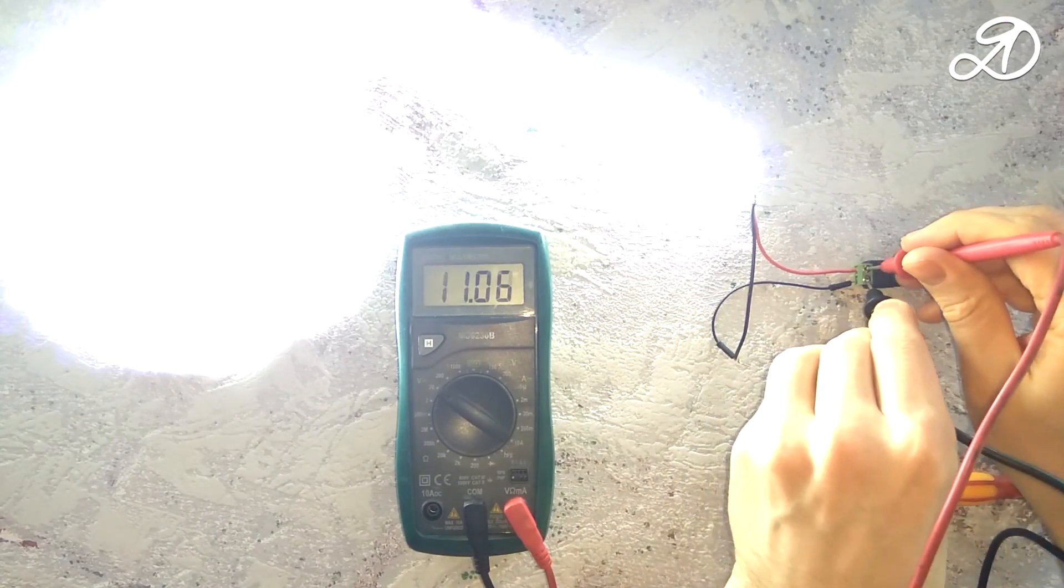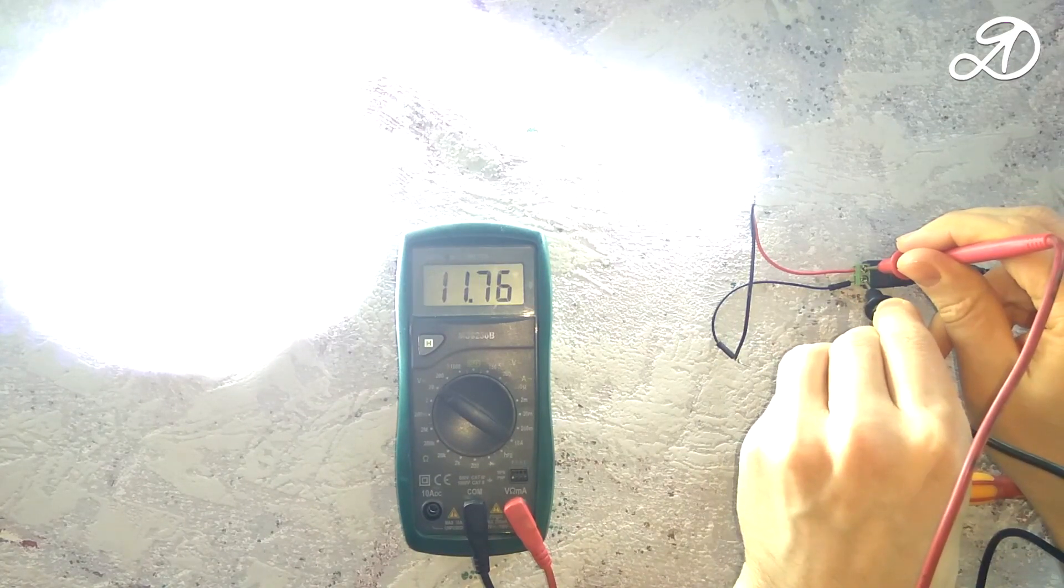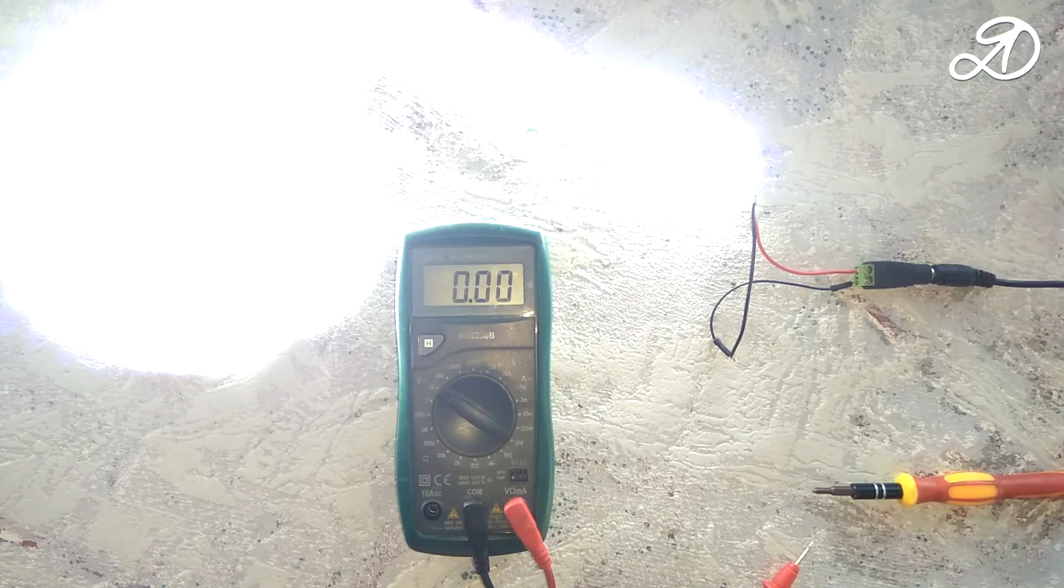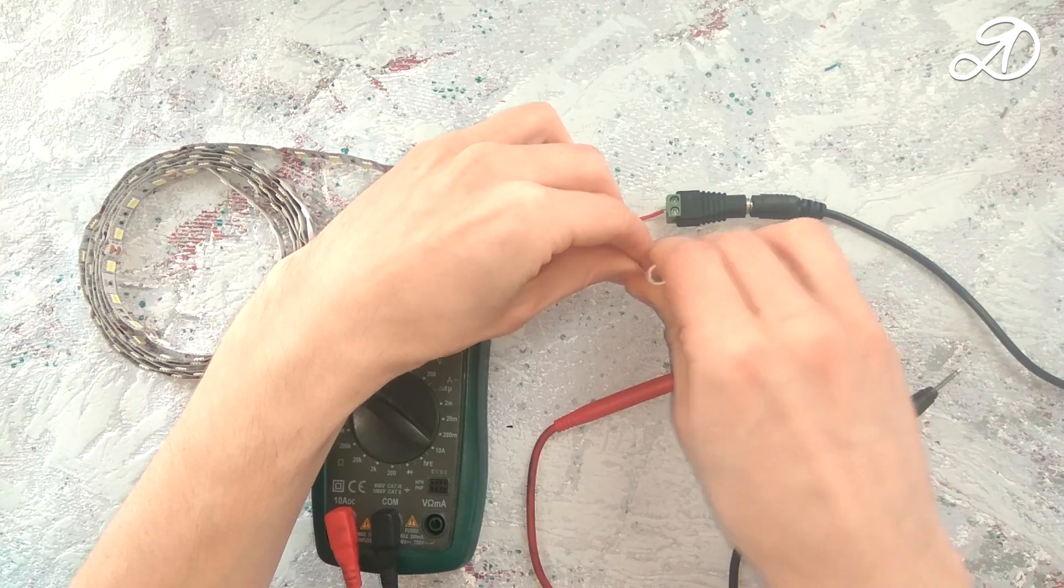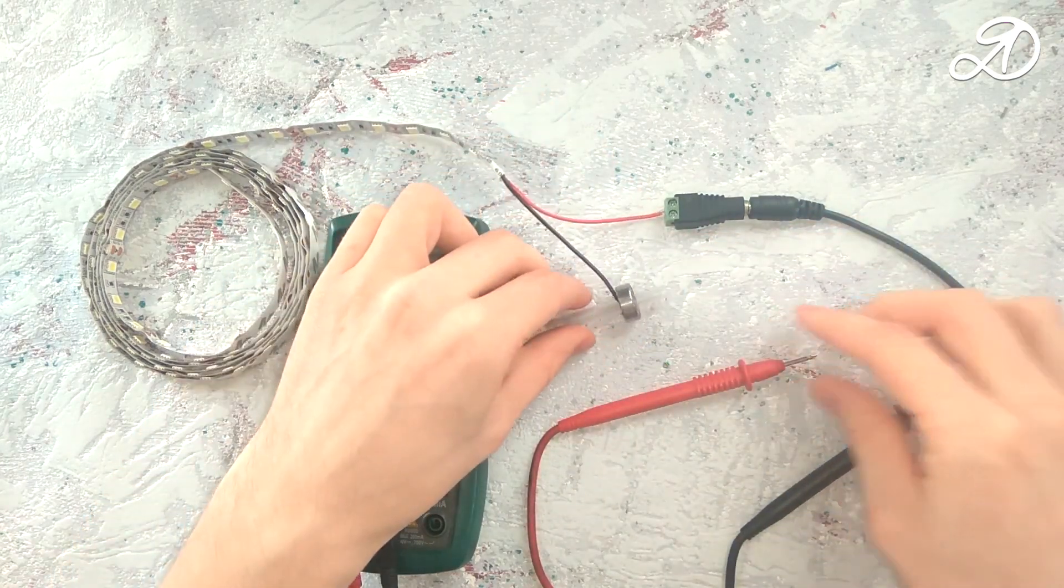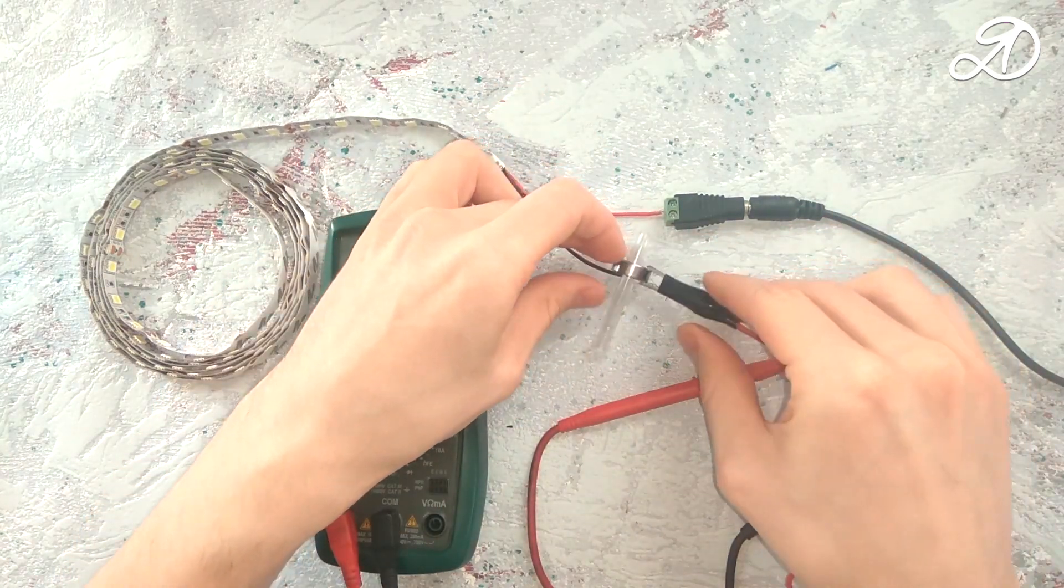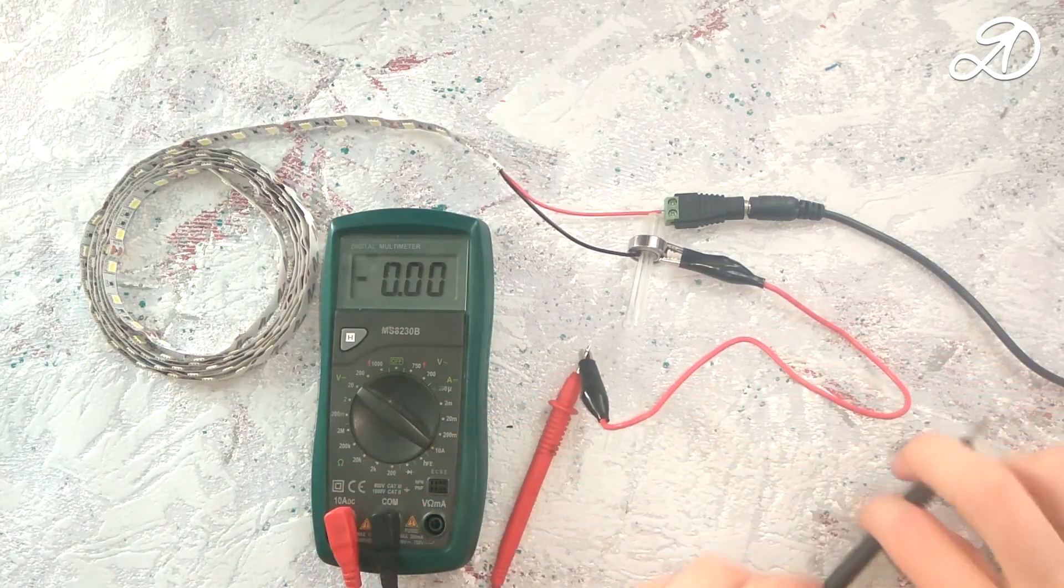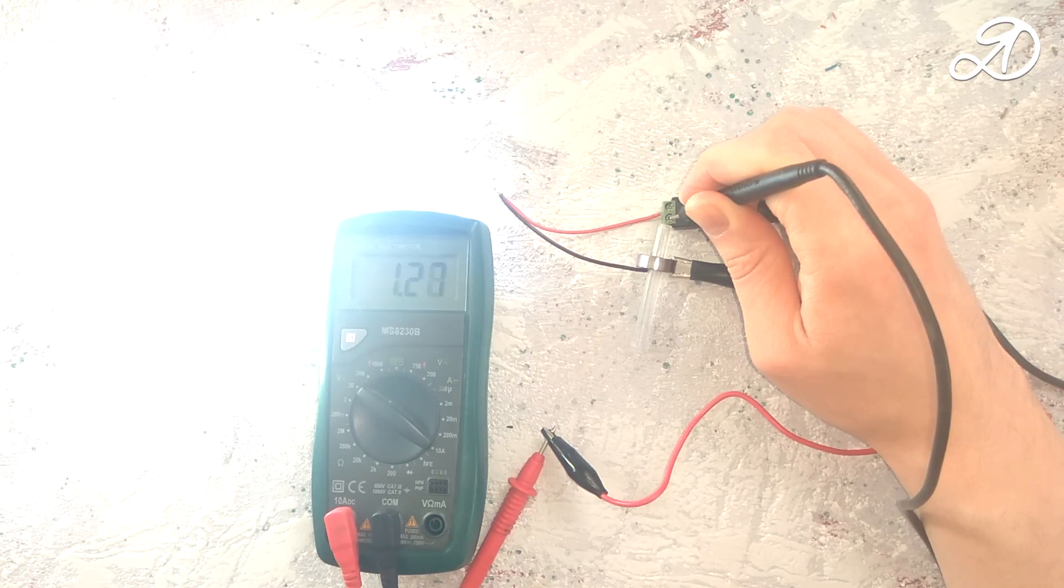The voltage is 11.76 volts. Now connect the tape through the bearing. The voltage of the tape is now an average of 10.7 volts. Amperage decreased.